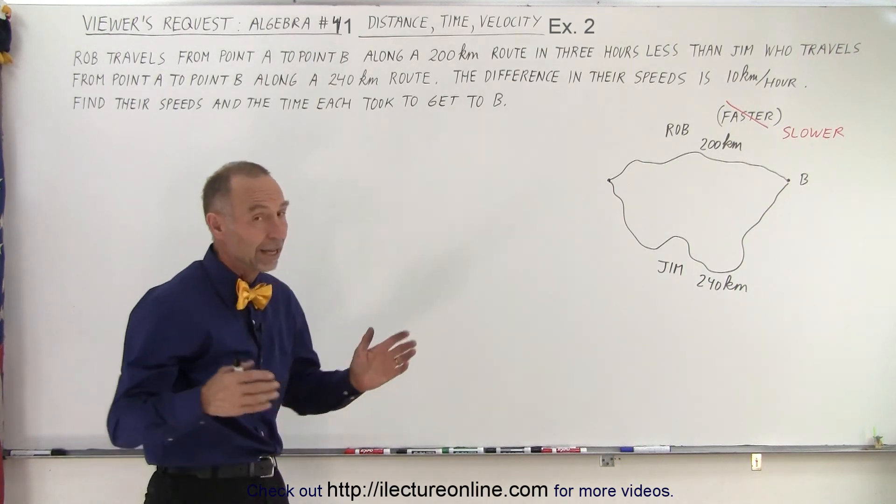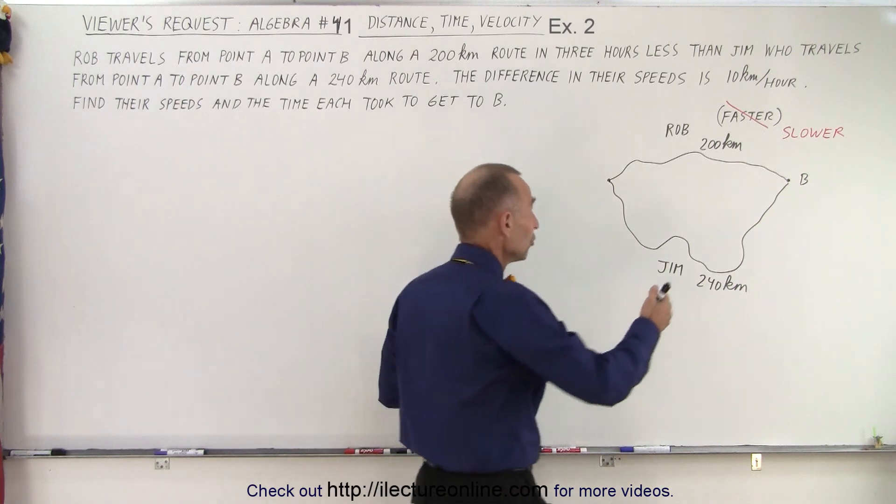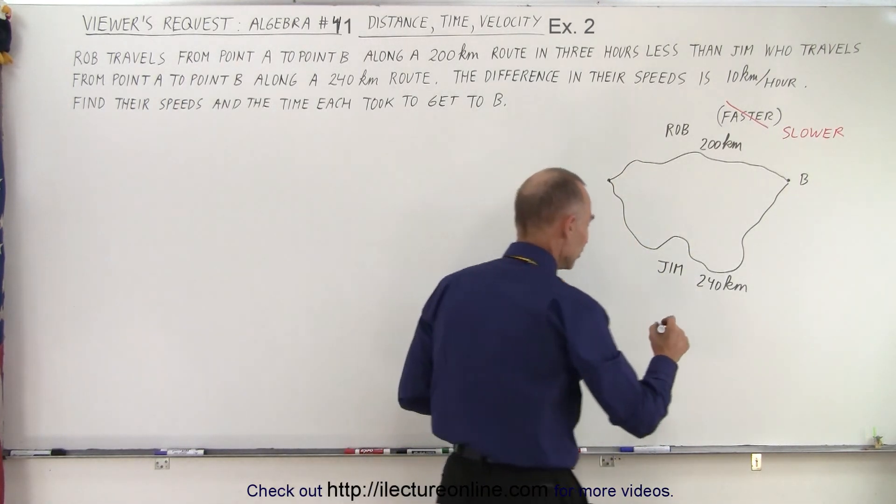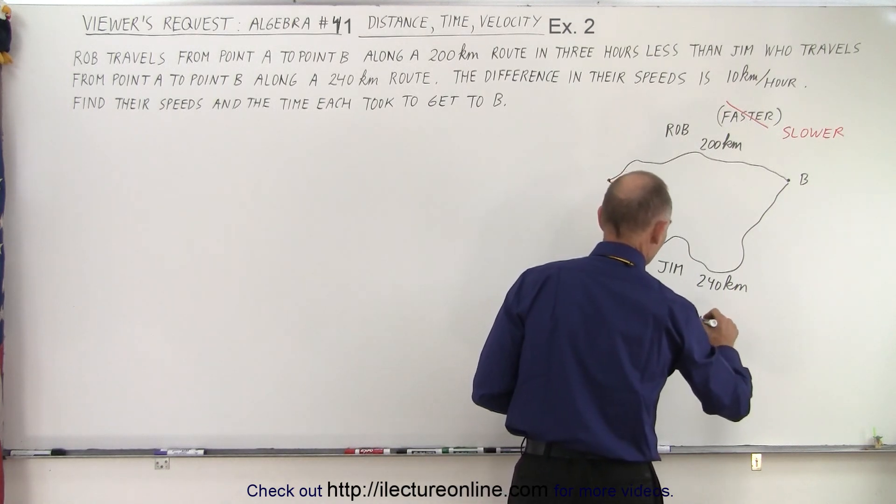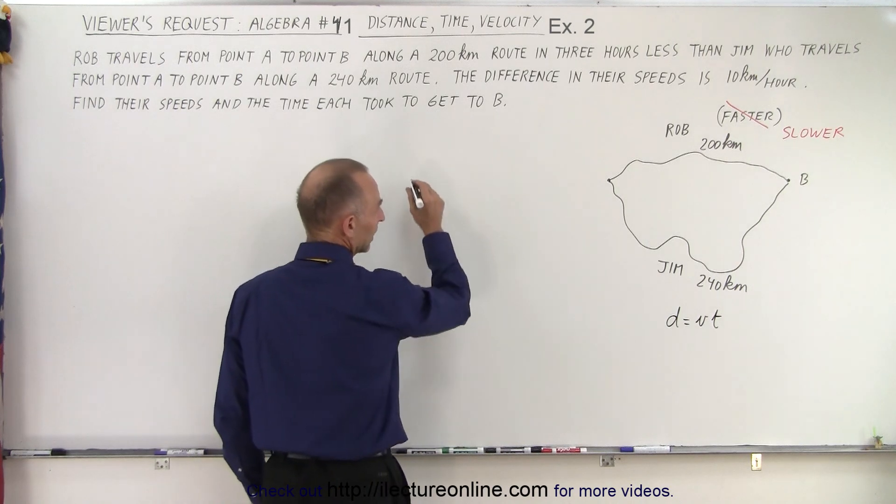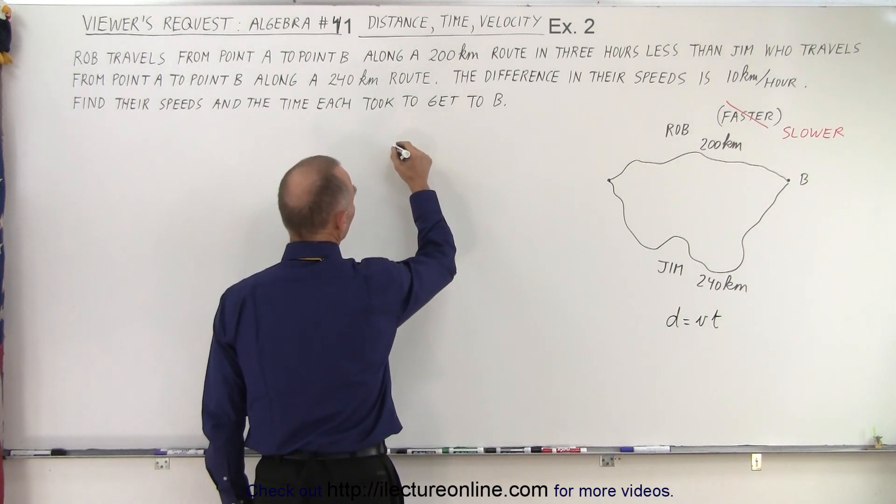So now we're going to say, let's assume that Rob was the slower of the two. Can we still get the correct answer? Remember, we need to use the equation that distance equals velocity times time.